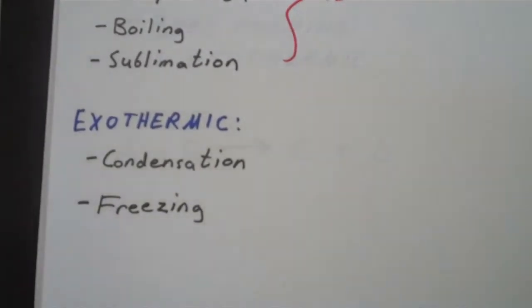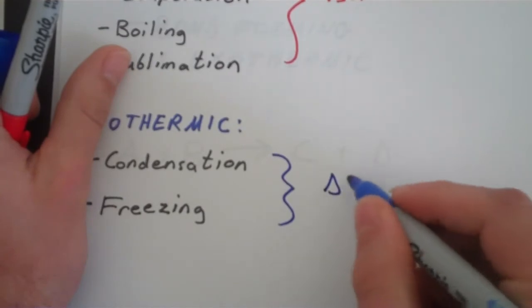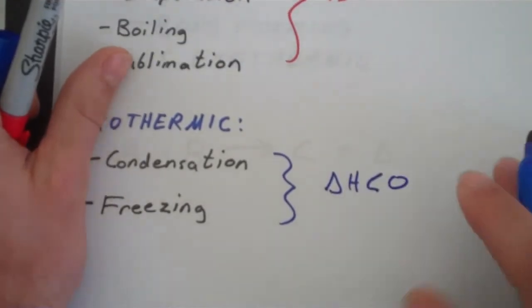Things like condensation and freezing, those are both exothermic physical processes. And, you guessed it, they have a negative delta H.